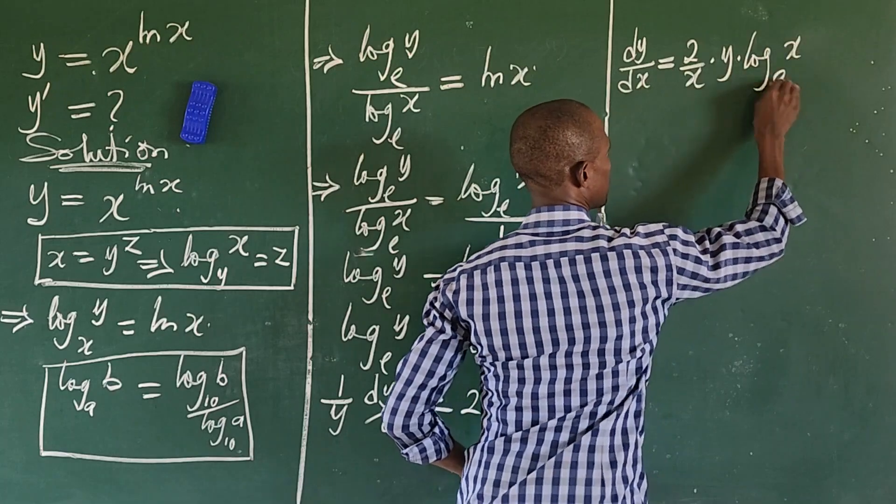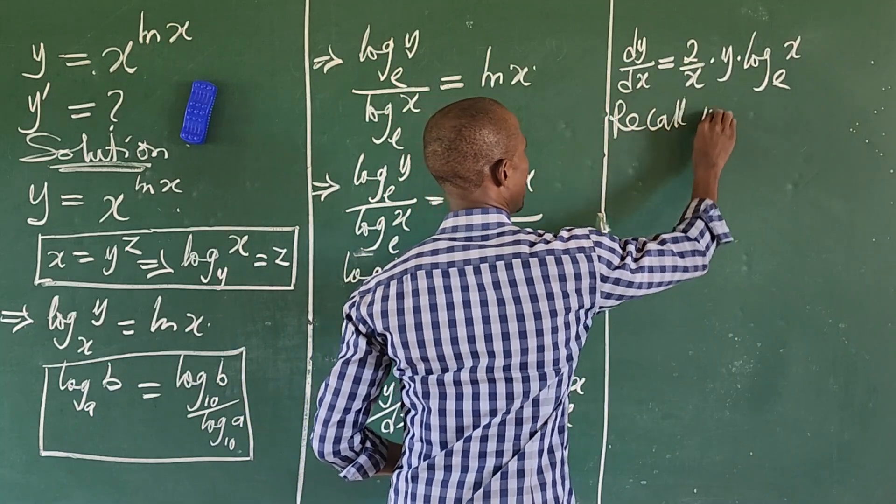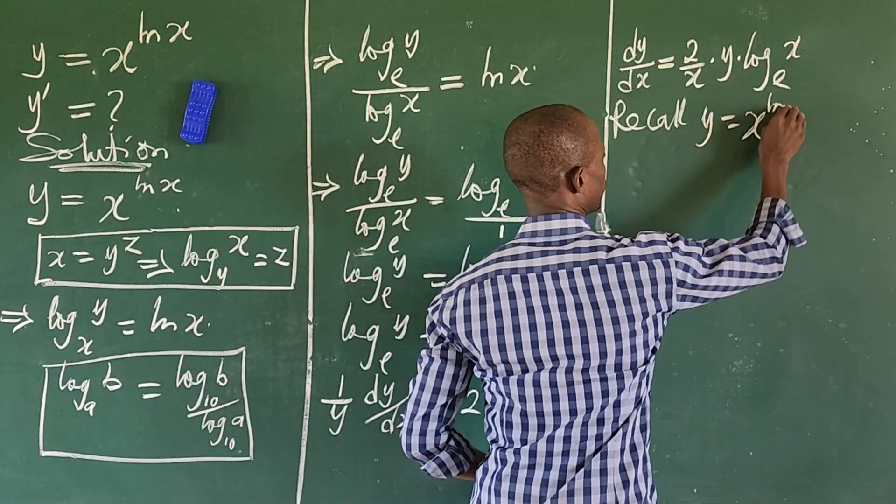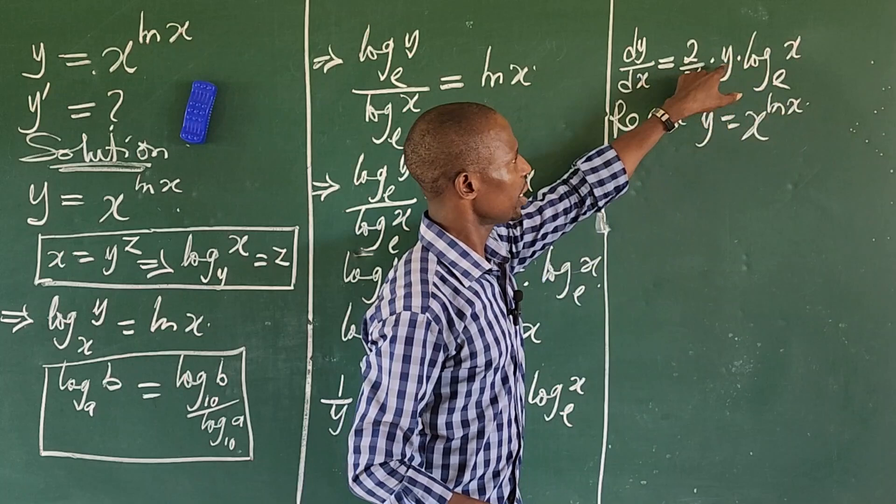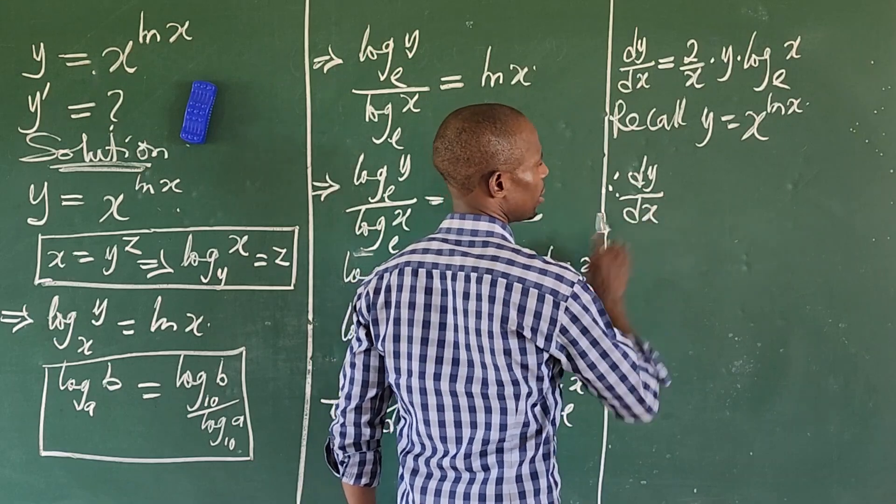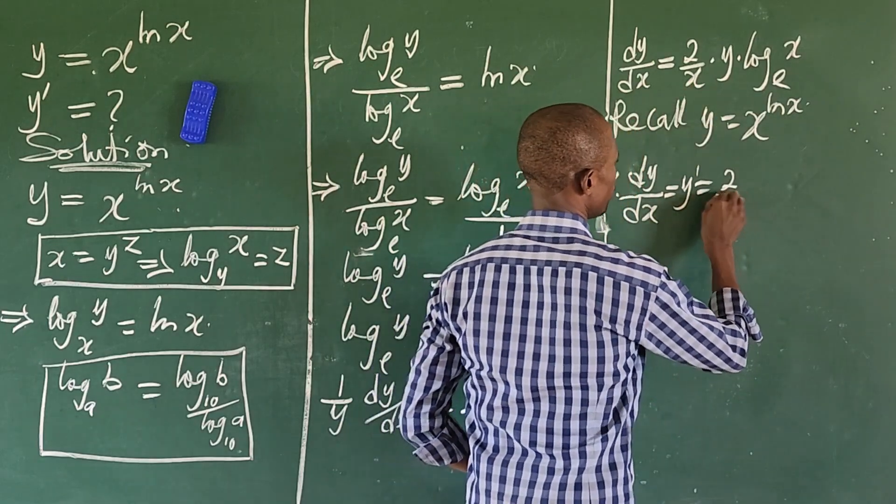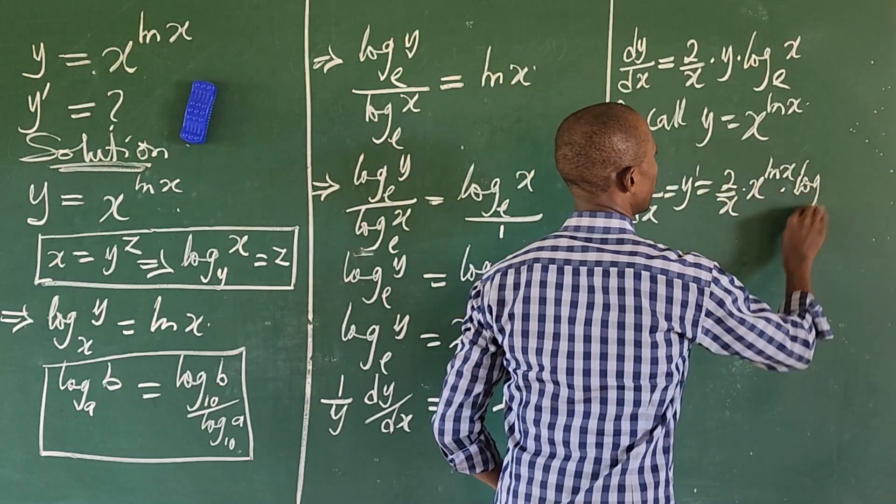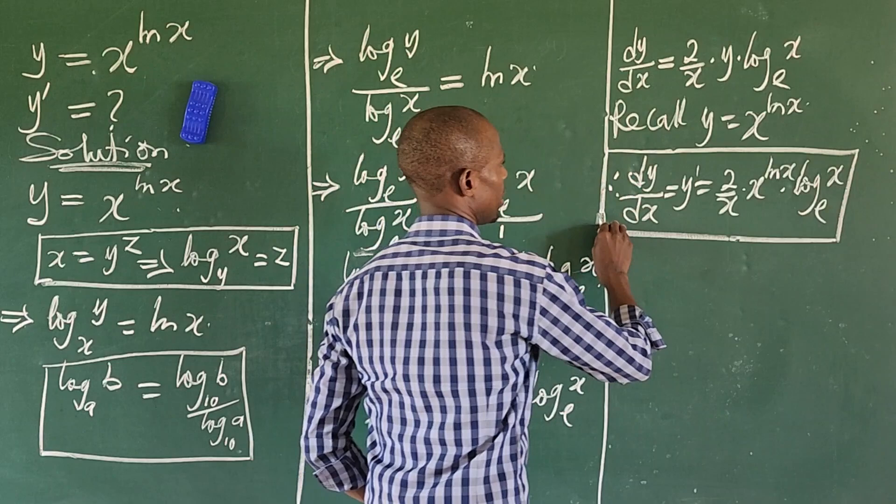But remember what is our y? You'll recall that our y is equal to x to the power of ln of x. So we cannot put x to the power of ln of x in place of y. So we can have this to be, therefore, dy/dx, which is equal to y prime, is equal to two over x times x to the power of ln of x times log x base e. So this is our answer, simple as ABC.